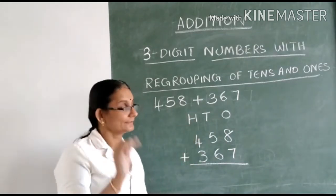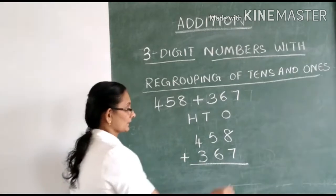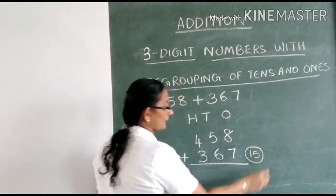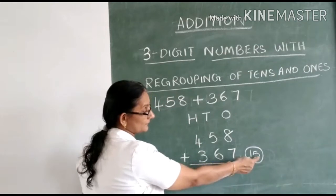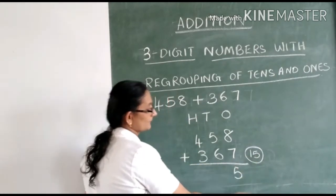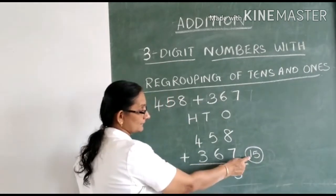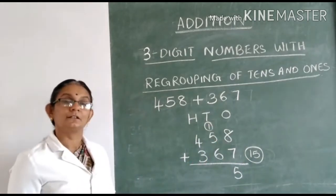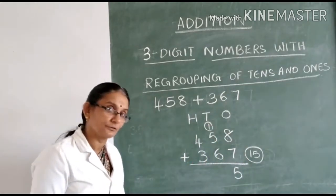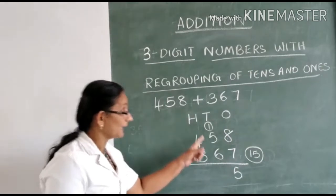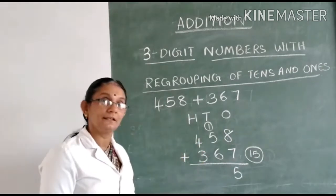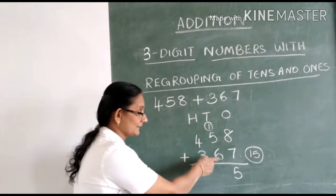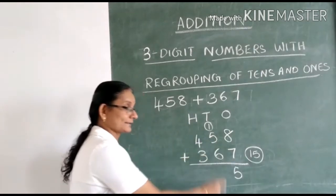Is it correct? Yes, this is 15. Now the digit in the 1's space is carried over to the 10's space. Next step is to add the digits in the 10's space. So first let us add the numbers 6 and 5.